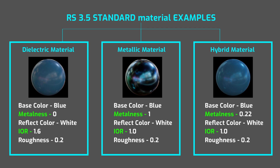As a summary: if you are using the new standard material with Metalness value 0, reflectivity can be controlled with IOR values. If Metalness value is 1, IOR values are irrelevant. And if you are using Metalness values greater than 0 but lower than 1, IOR values are supposed to be 1.